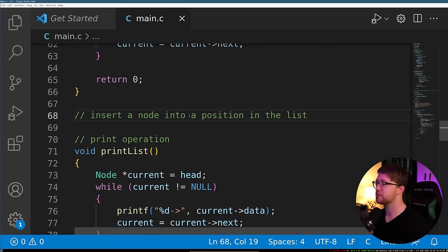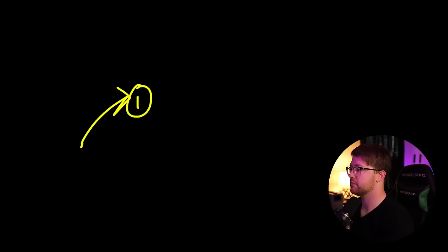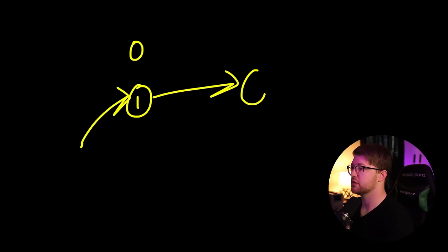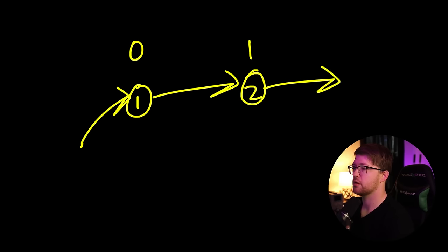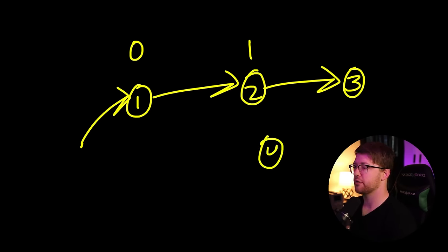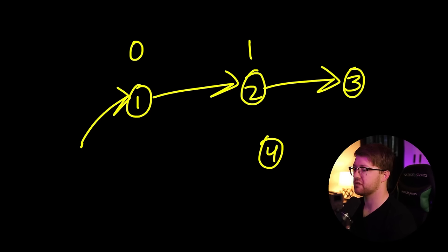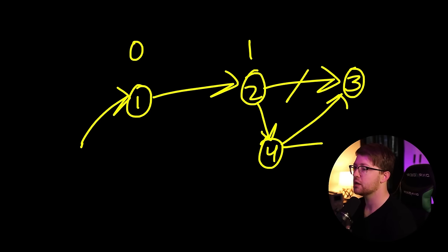Now we have the final operation: insert a node into a position in the list. We have our head pointing to node one at position zero and node two at position one. We want to insert a new node — node four — at position one, putting it in front of node two. We create the new node, set its next pointer to current->next, and set current->next equal to the new node, effectively inserting it between the two nodes.